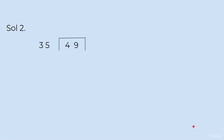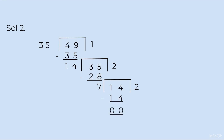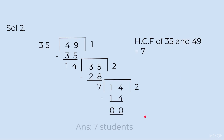Using the division method: 35 goes once into 49; subtracting gives remainder 14. Bring 35 inside; 14 goes 2 times giving 28, remainder 7. Bring 14 inside; 7 goes 2 times giving 14, remainder 0. The divisor at the stage where we got 0 remainder is the HCF. So HCF of 35 and 49 is 7. Answer: 7 students.